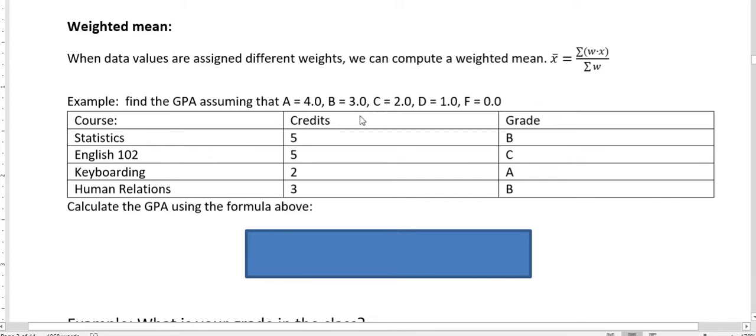So if we're looking at GPA, and let's say we took a statistics course worth five credits and we got a B. And up here it tells us that a B is equal to three points. English 102, also five credits, we got a C, that would be equal to two points. A B is three, C is two, D is one, so forth. And there's more grades in there, of course, if we had a plus or a minus. But just to keep it simple, keyboarding is two, human relations is three.